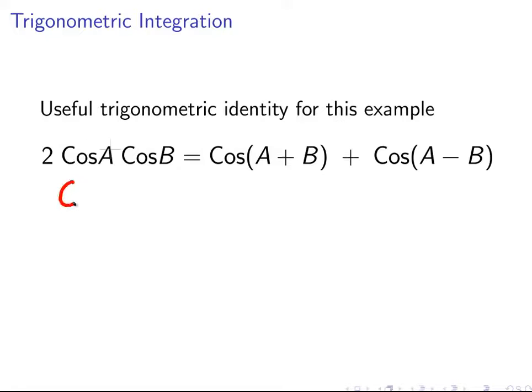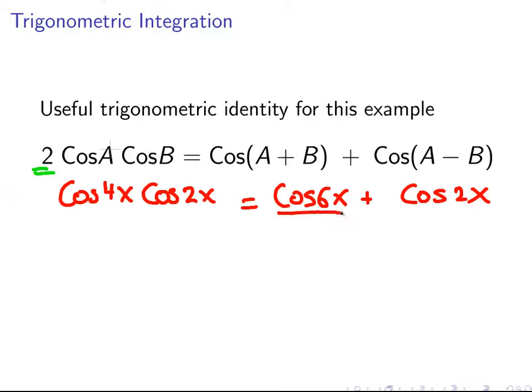Well, cos of 4x cos2x, that is equal to cos6x plus cos2x. Now remember this 2 over here, so we have to account for that. So we are going to divide this side by 2. We will actually just divide both of those by 2. So we can rearrange our expression in that form there.